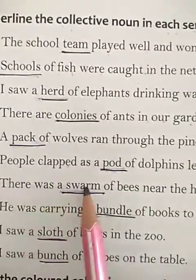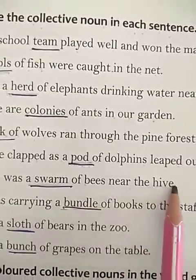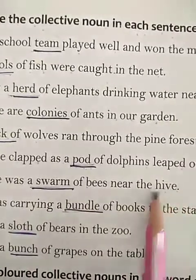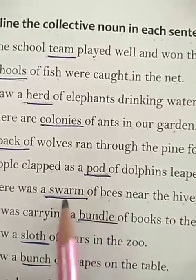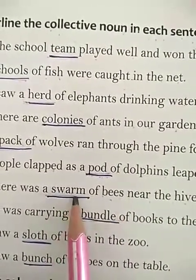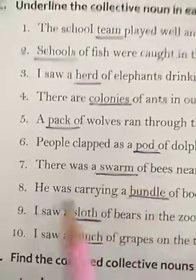Number 7: There was a swarm of bees near the hive. Near the hive there was a group of bees, and it is shown with 'swarm'. So, swarm is a collective noun. Underline it.